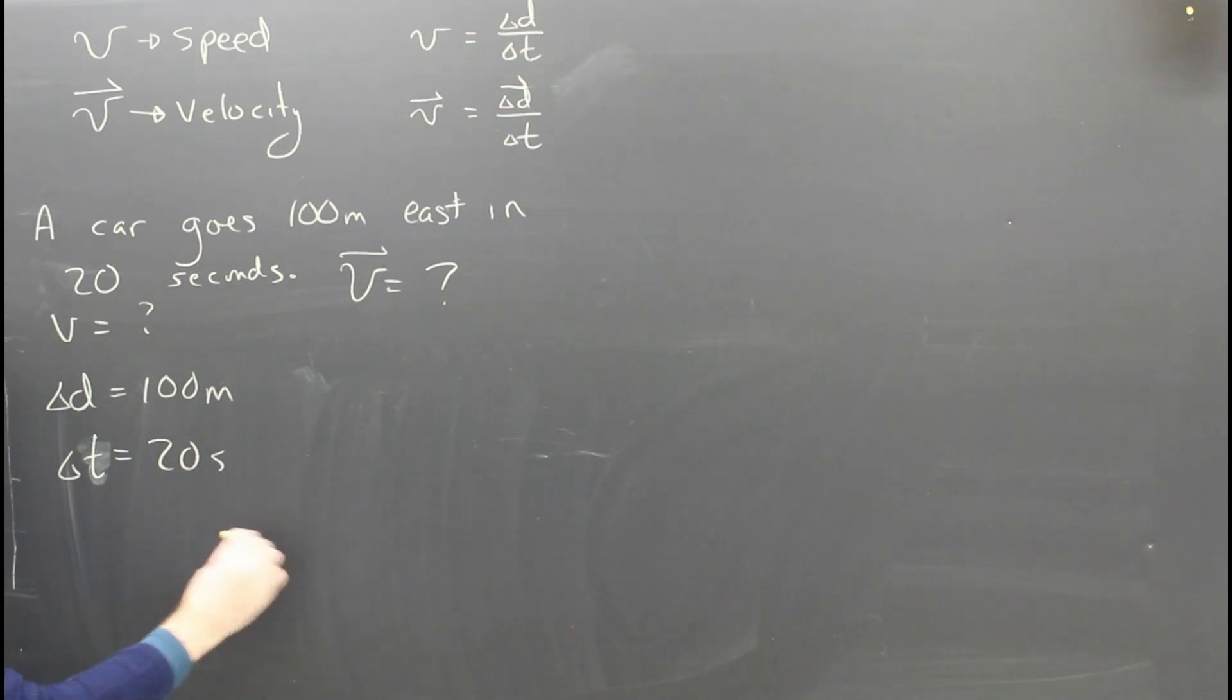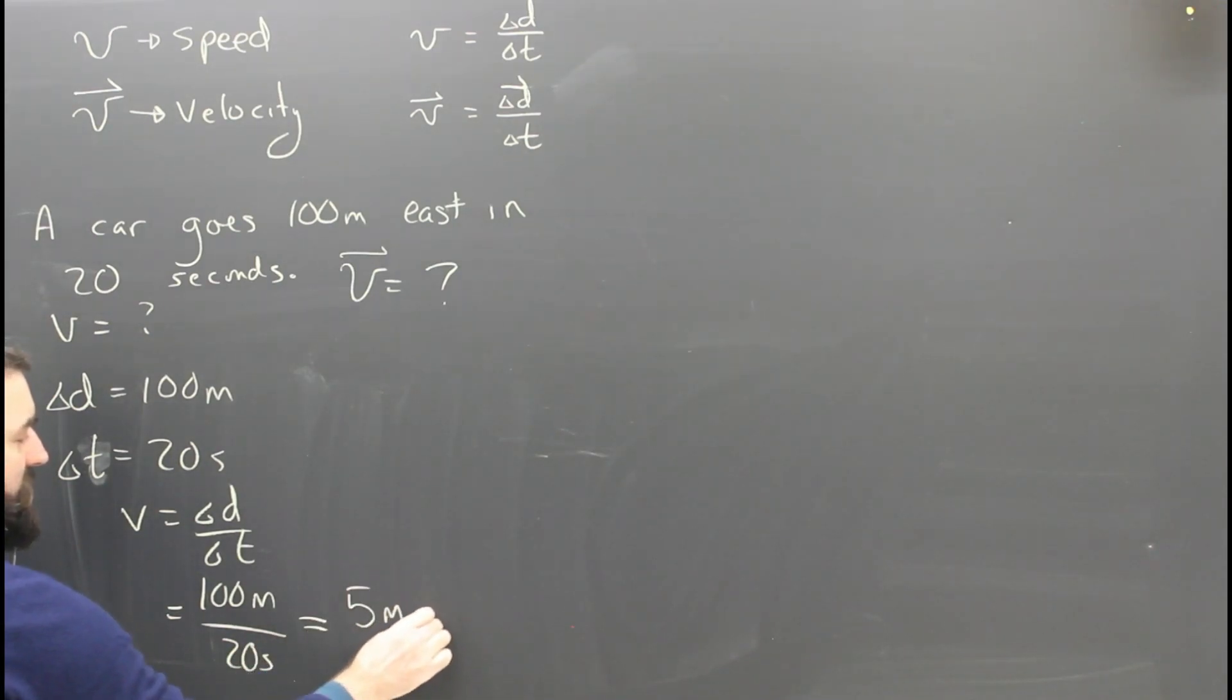The formula, of course, is that speed is distance over time. Which means that 100 meters divided by 20 seconds is equal to 5 meters per second. So that's the speed of the car. Notice how I put the units in and the answer, the units for the answer are just whatever the math says they have to be. Speed is measured in meters per second. Meters divided by seconds.